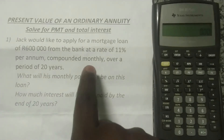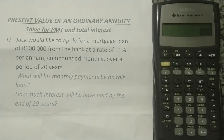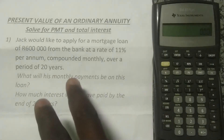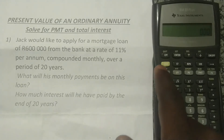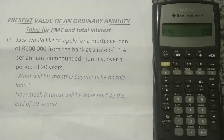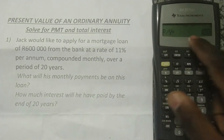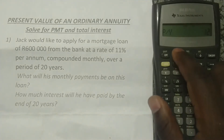Since it's compounded monthly, we need to make sure our calculator is set to compound monthly. By default it compounds annually — once per year — so we need to change it to 12 times per year. We press Second Function, then I/Y, which shows P/Y on top. It's asking for payments per year, so we enter 12 and press Enter.